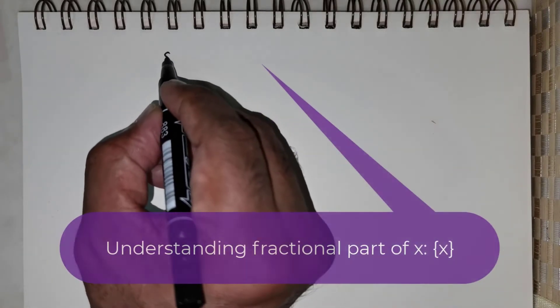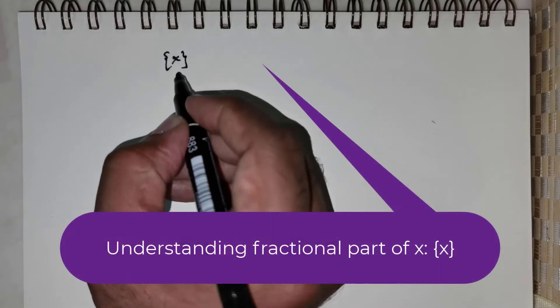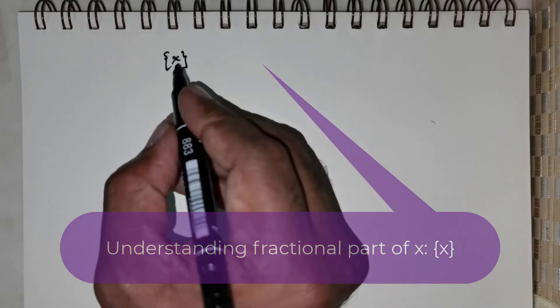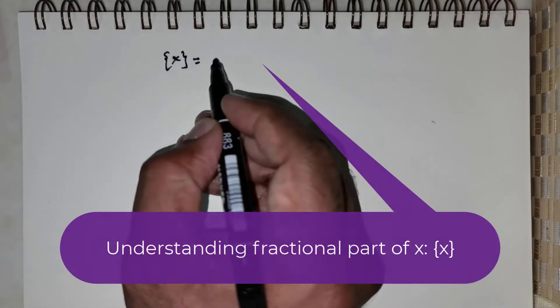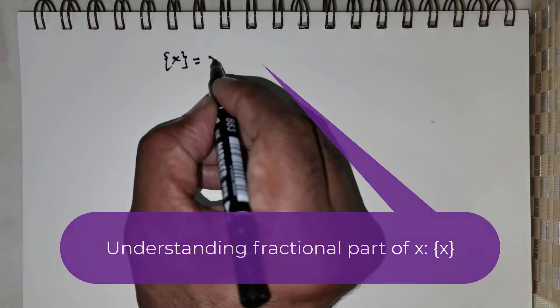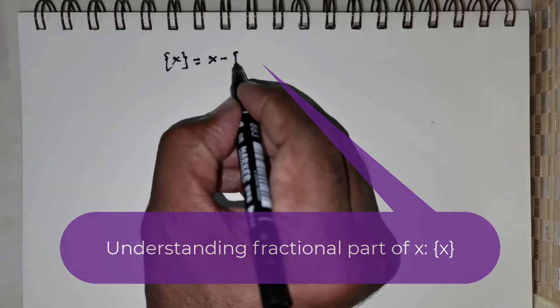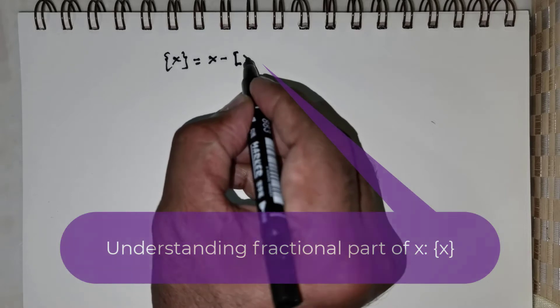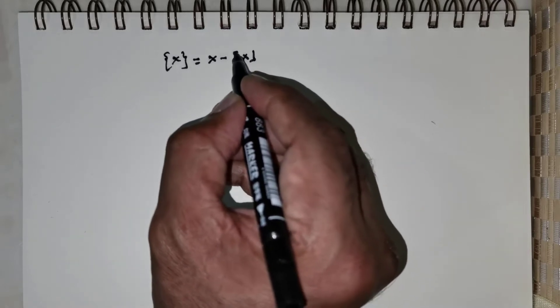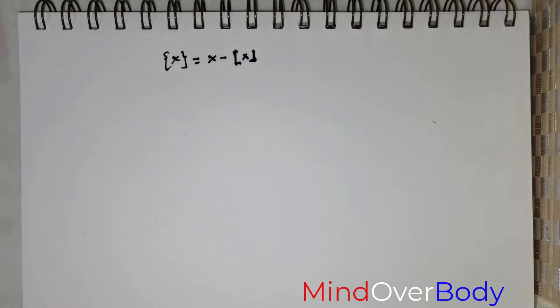To gain a bit of further understanding, let me explain the fractional part of x. The fractional part of x is also represented as x minus the floor of x, where floor denotes the floor function of x. So this is how it would be represented.